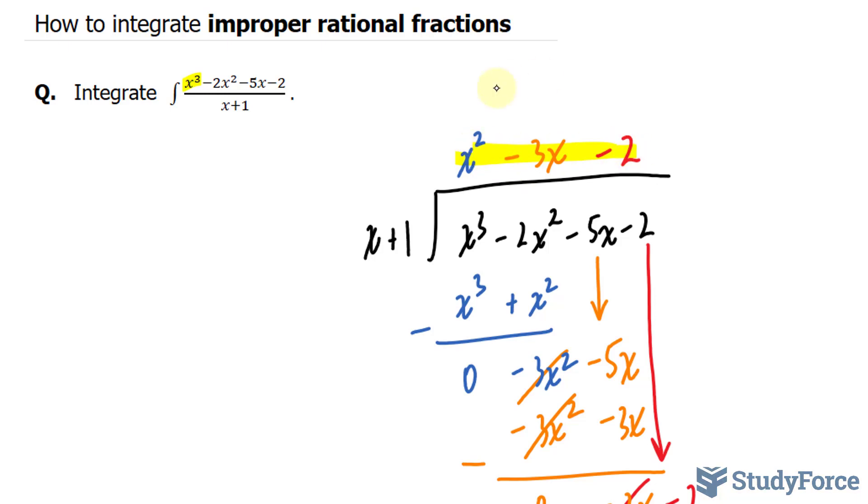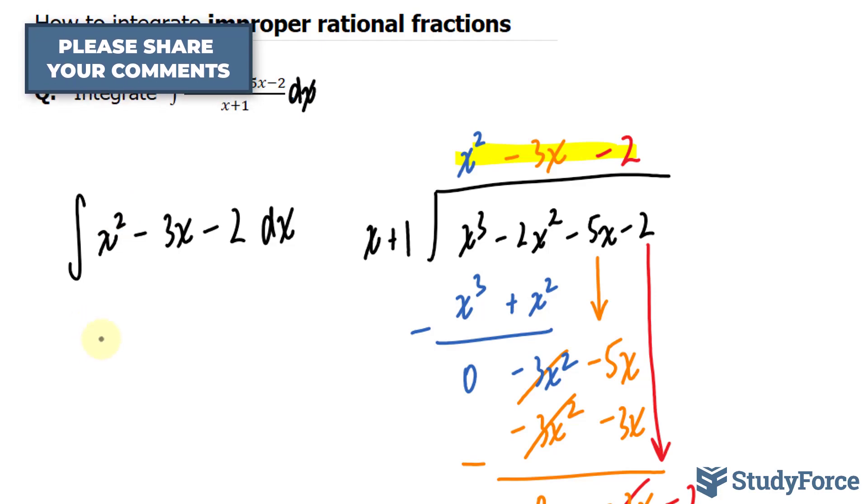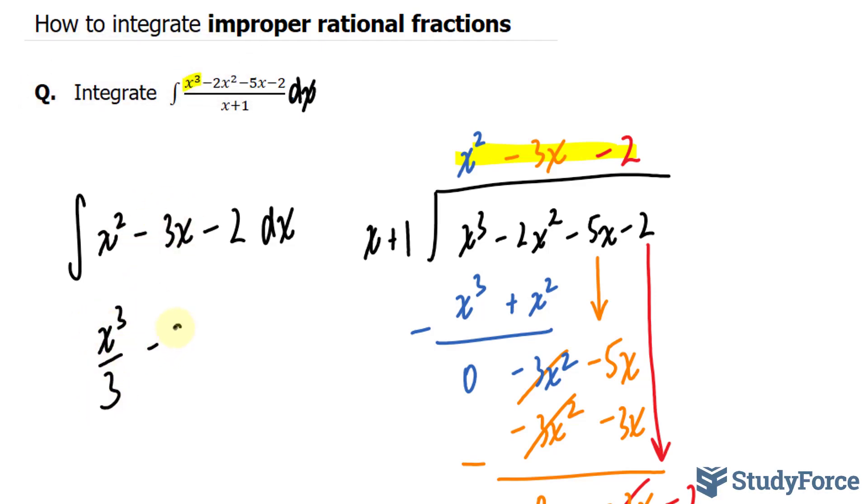Now all I have to do is integrate x to the power of 2 minus 3x minus 2 dx. There should be a dx here. Integrating this is easy. I'll start with this first term. x to the power of 2 becomes x to the power of 3 over 3. This term becomes negative 3x squared over 2. And this term becomes negative 2x with an arbitrary constant c at the very end.